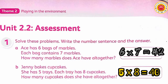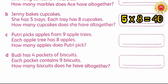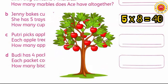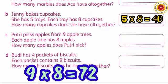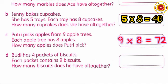Please correct your answers if any are wrong. Next, part C: Putri picked apples from 9 different apple trees. At each tree, Putri got 8 apples. So 9 times 8 equals 72. Or in English: 9 times 8 equals 72.